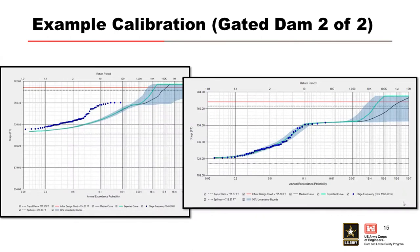Here's another example of calibration to observed peak stage events for a gated dam. Solely by making adjustments to the best estimate reservoir model stage discharge rating curve, we were able to closely match the observed peak stage data. Using full capacity obviously doesn't match well, but by making adjustments throughout the range of stages to the discharge using the rule curves, we're able to match those observed data very well. We now have higher confidence in the stage frequency curve, especially at the less frequent end where we look at top of dam and PMF type elevations for overtopping failure modes.